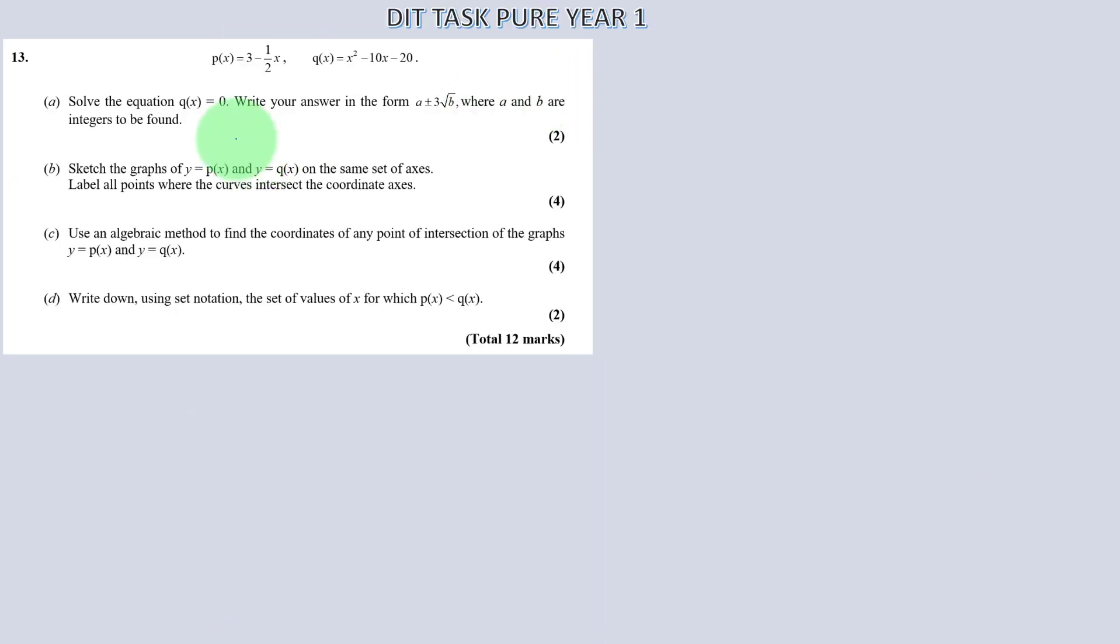Okay, as requested, we're writing this, going through this question now. As requested. So honestly, do watch these videos. It's actually very easy marks. Question 13. It says solve the equation qx equals 0. So qx. So that means we just have to solve this. And do it in surd form. So the easiest way is you could do quadratic formula or we could just complete the square with it. It takes us no time at all.